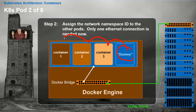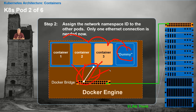Suddenly all containers are in a pod with more room. In the process of doing this, notice there only needs to be one ethernet cable — in the previous diagram there was an ethernet cable for each container, but we don't need that anymore. Furthermore, all these containers can now share the same IP address because they're all living in the same network namespace.